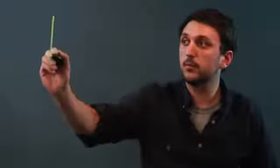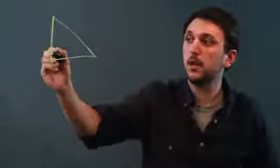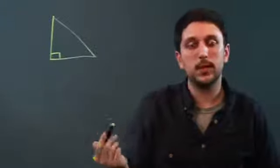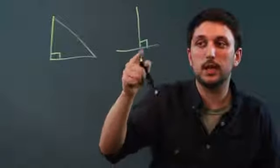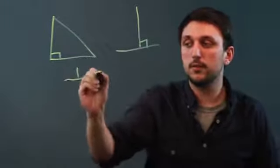So first, let's draw a right triangle. Now, what does perpendicular mean? Lines are perpendicular if together they form a 90-degree angle. That's why we use this symbol for perpendicular.